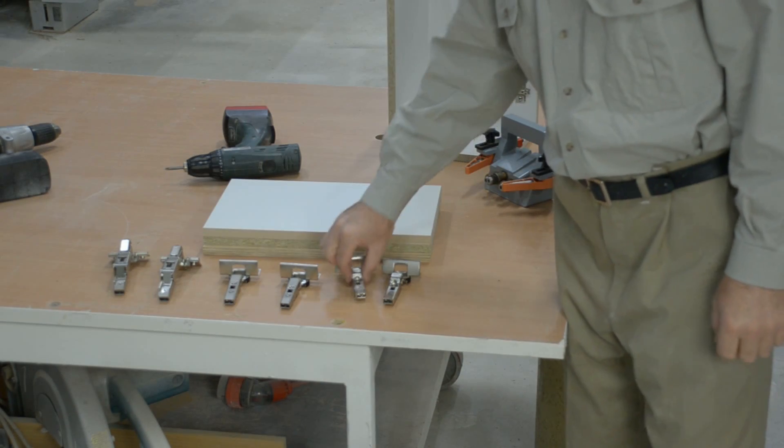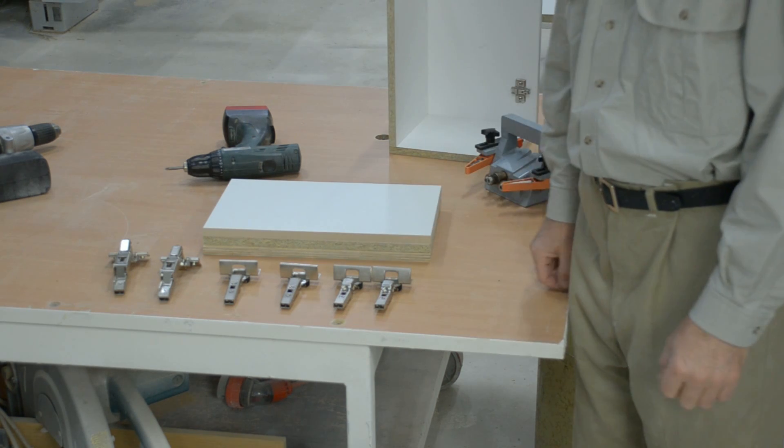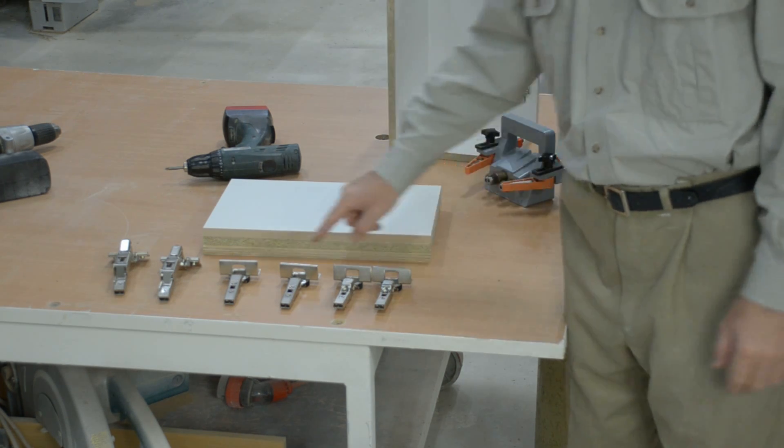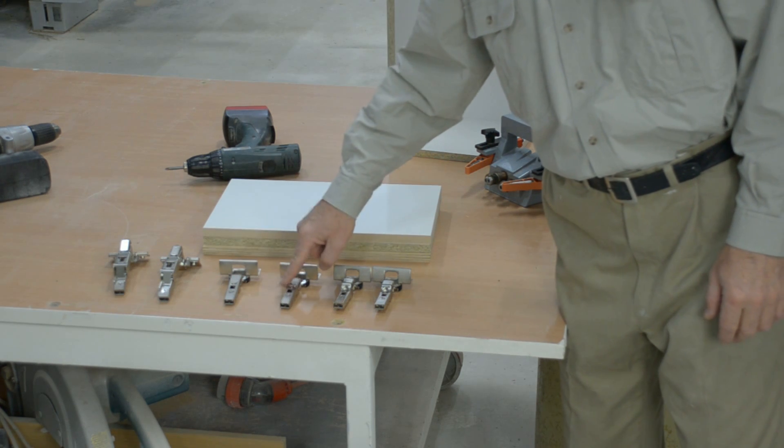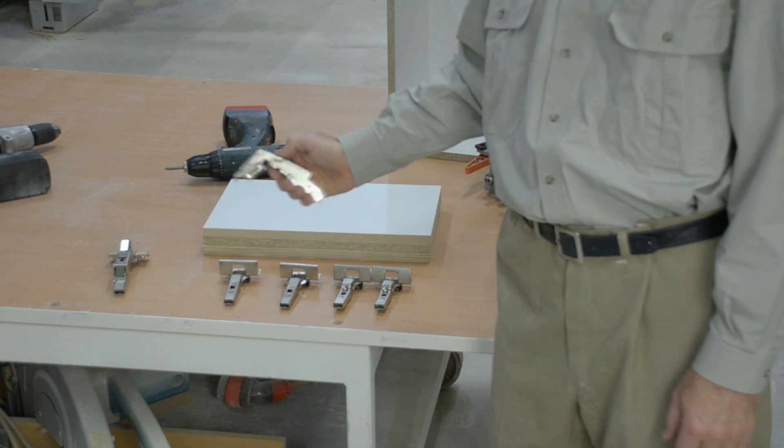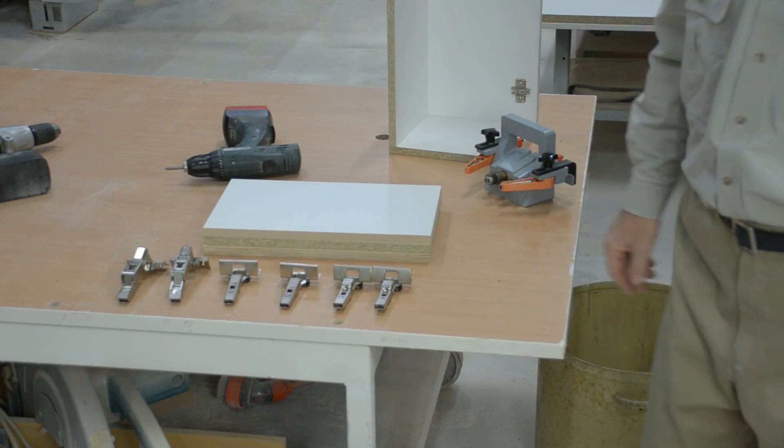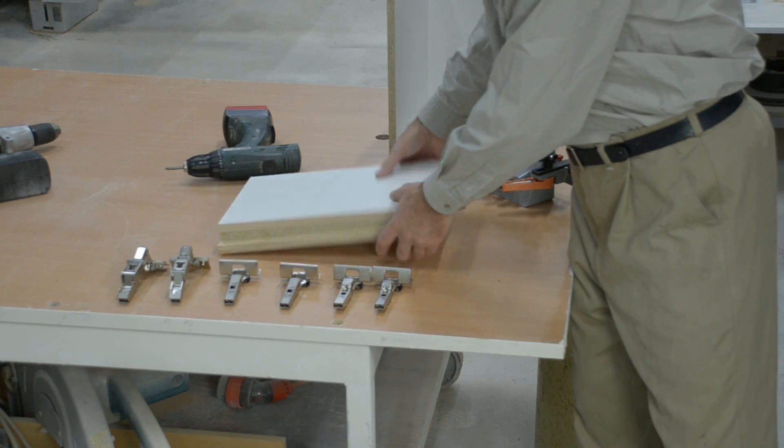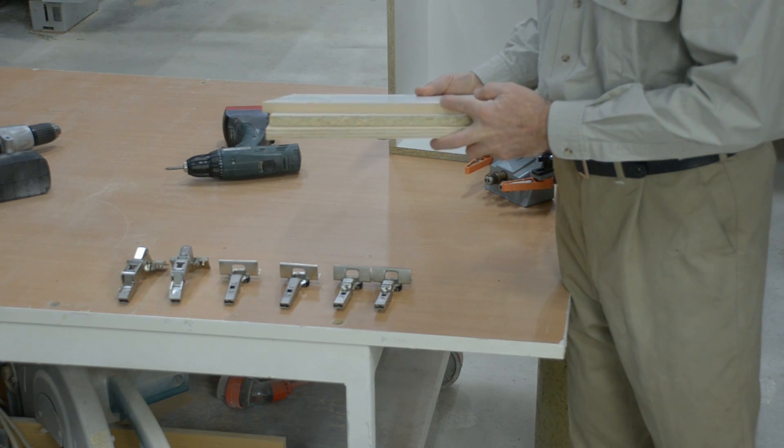The operation today is of three different types of hinge: the crank hinge which is a half overlay, straight hinges which are always full overlay, and the 170 degree hinges also full overlay. Three different types of hinge but also showing three different types of material: plywood, particle board, and MDF.